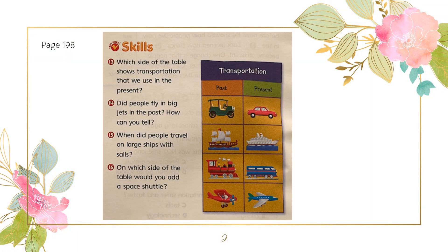On page 198, there is a table with two columns — one for past and one for present — showing different modes of transportation. Question 13: Which side of the table shows transportation that we use in the present? Looking at the pictures, the ones on the right side look more similar to the transportation we use today, so the right side shows present transportation.